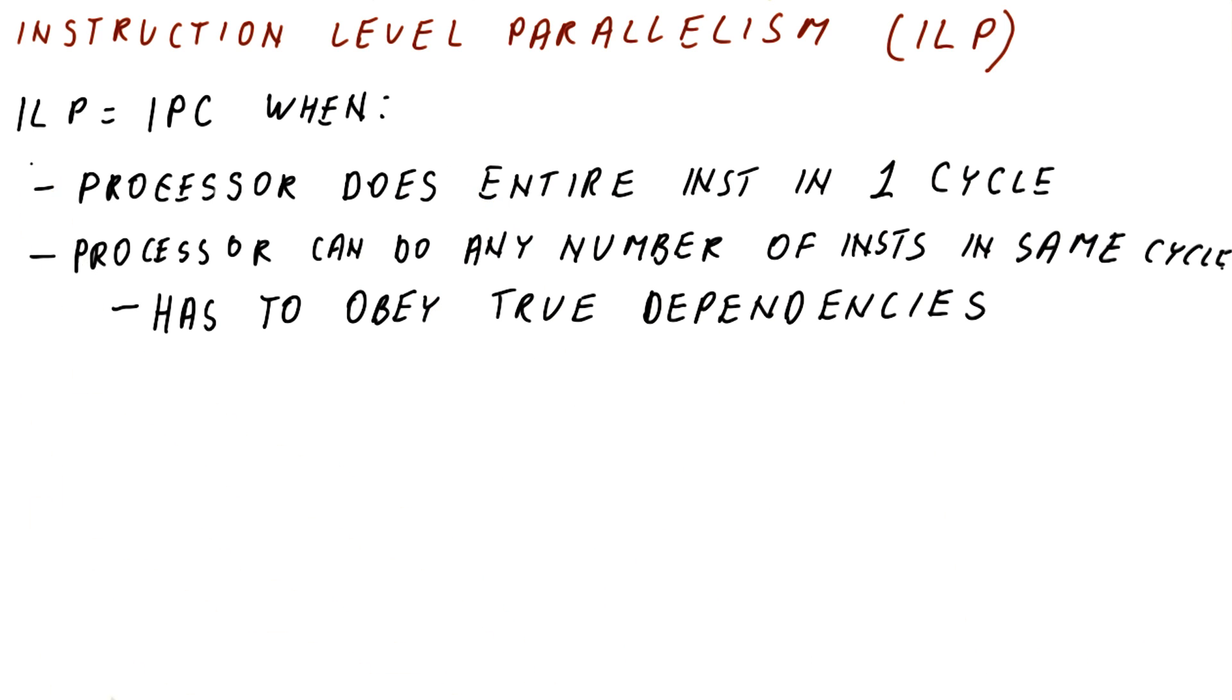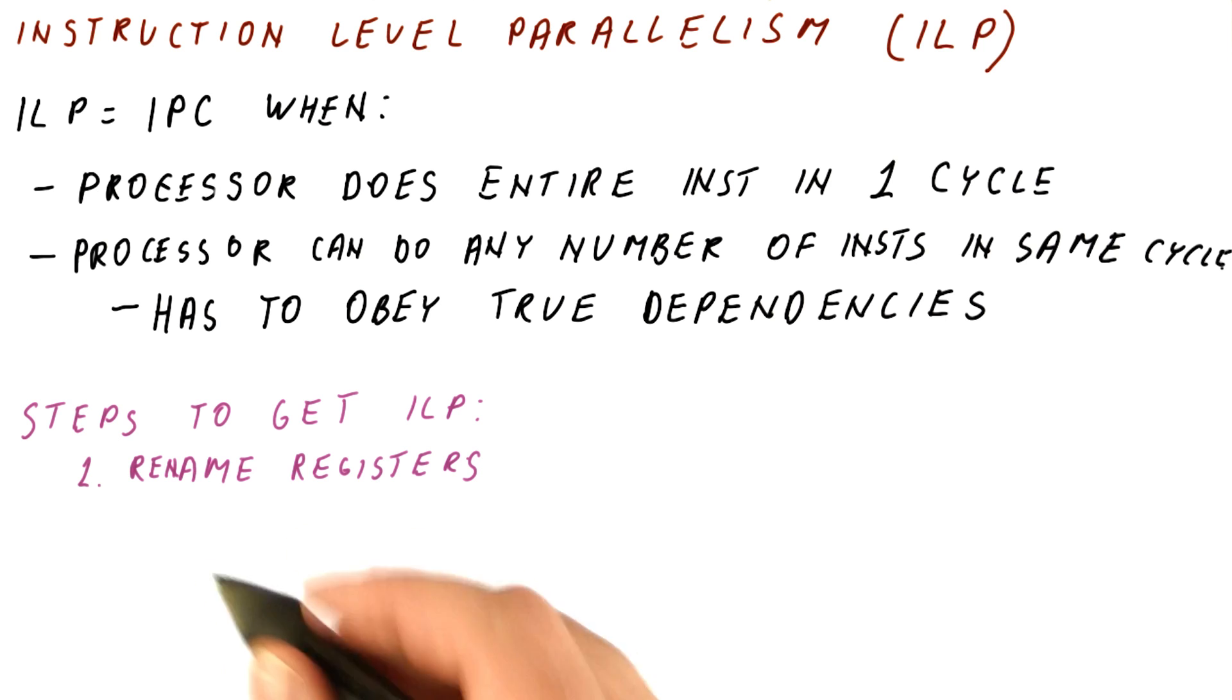How do we compute the ILP for a program? Well, we first rename all the registers, so we do registry naming first and then we pretend we execute. So what we do is say, okay, in the first cycle, these are the instructions that don't depend on anything so they can go. In the next cycle, we go through the same thing and so on until we run out of instructions, at which point we know how many cycles it is.